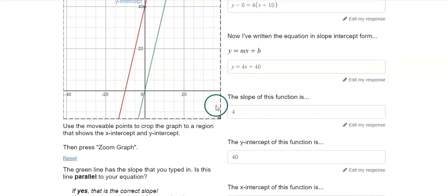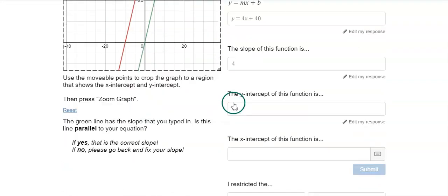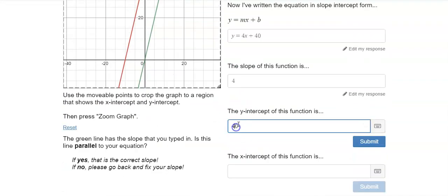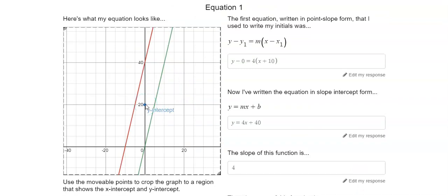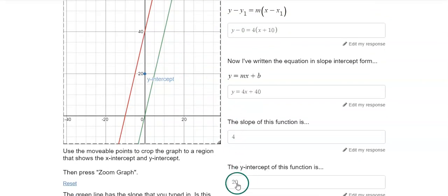When I press submit, it's going to show me where the Y intercept is that I typed in. So let's say I got it wrong, and I typed in 20. Is that where the Y intercept is? No. So you would know immediately that you need to redo this question. The Y intercept is where the graph crosses the Y axis.